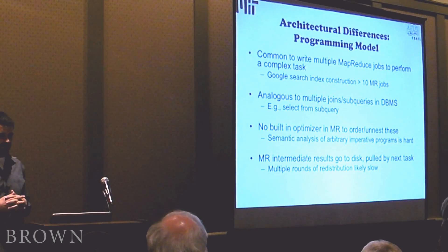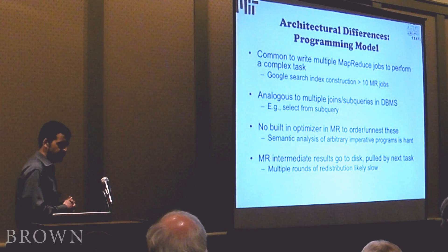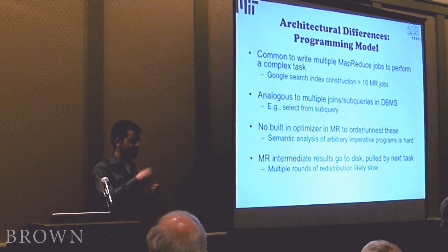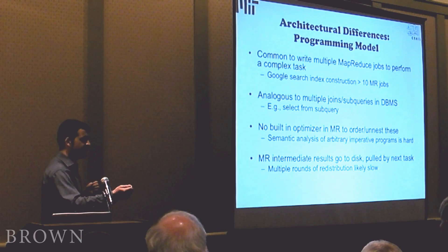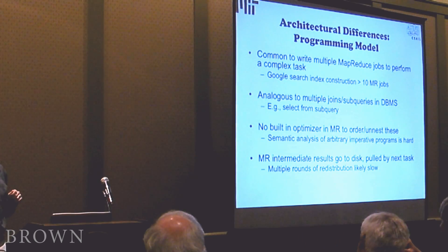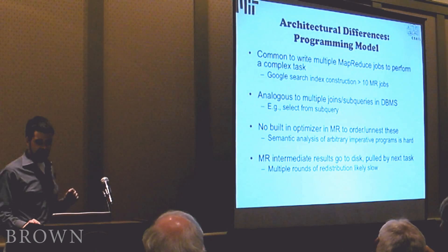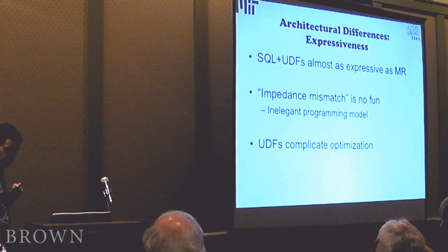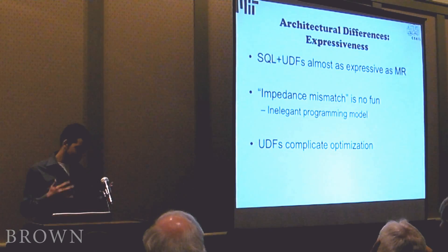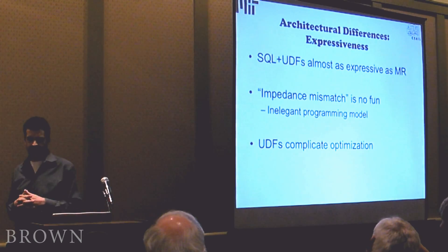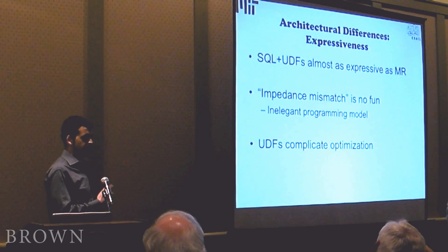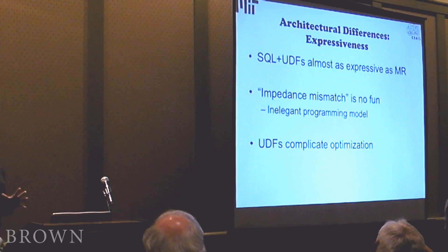Another major architectural difference is that MapReduce intermediate results are written to disk — done for fault tolerance purposes. The map workers write their results to disk and the next phase of reduce workers reads those results in from disk. Similarly, reduce workers write their results out to disk and the next round of MapReduce workers reads those in. This is very different from the pipeline model familiar in databases and has serious implications on the performance of these systems. Regarding expressiveness, at some theoretical level there's not a big difference — you can usually figure out how to write almost anything as a MapReduce job as a collection of SQL with user-defined functions embedded into it.